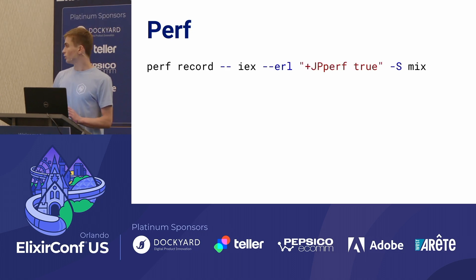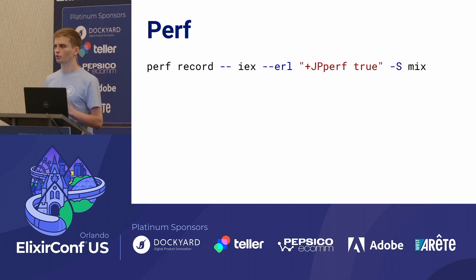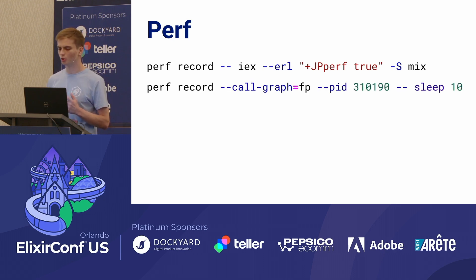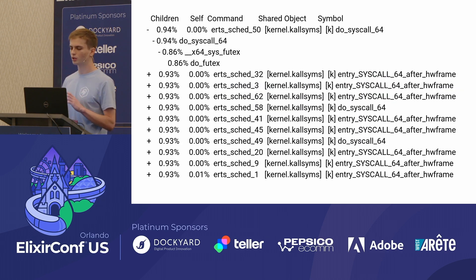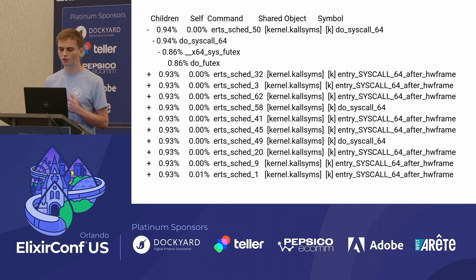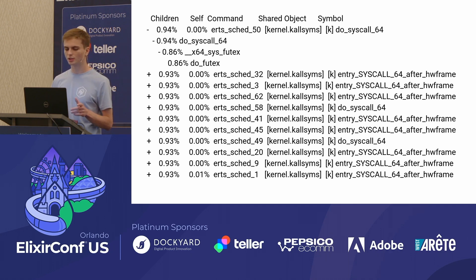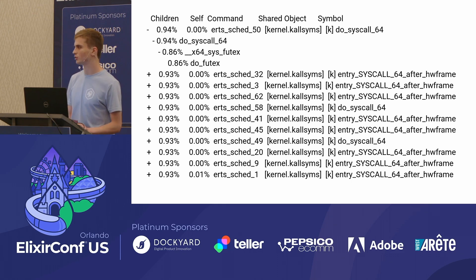Perf is an operating system tool that allows you to determine which functions are called most frequently, and its usage is very easy and also quite powerful. You start your Erlang virtual machine with the jperf true flag so that when you get the report you see function names and not just memory addresses. Then you record your operating system for, say, 10 seconds and call perf report. As a result you get a call chart showing which functions are called most frequently. In our case there were a lot of syscalls and calls to fast user mutex, suggesting some problem with mutex usage. This dump was taken from the INET backend after the possible bug occurred.